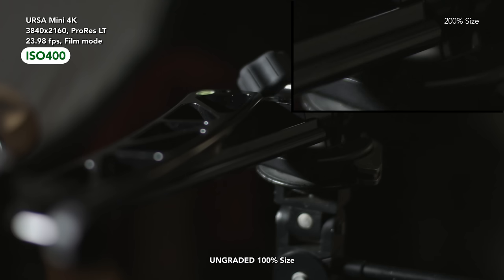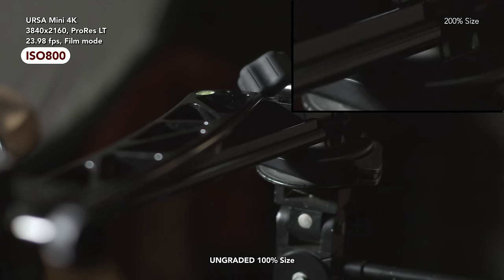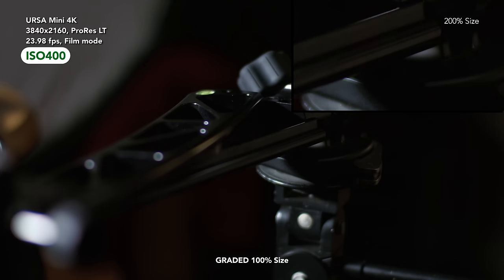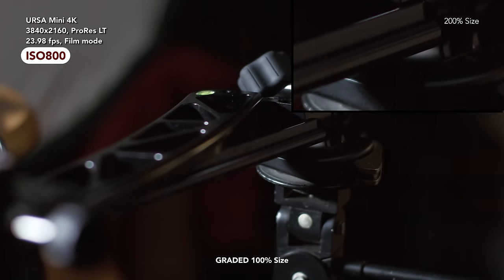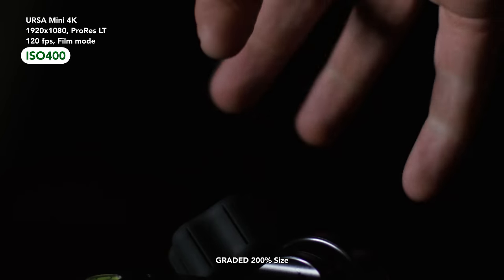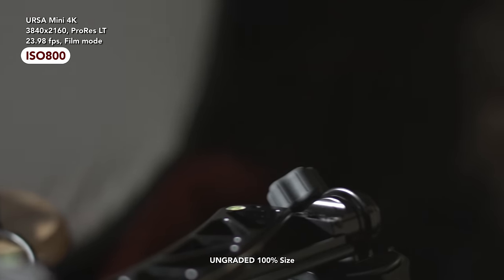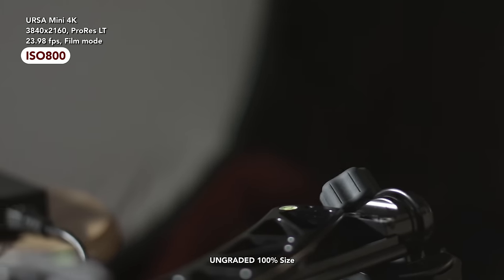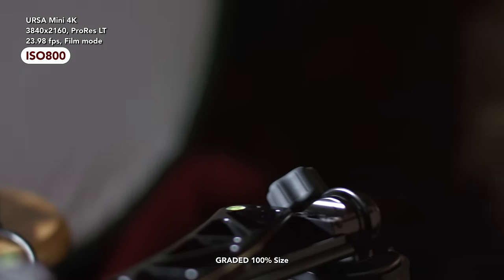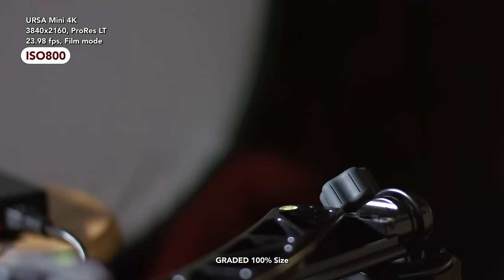ISO 800 is just awful. It is so riddled with noise, I can only imagine wanting to use it in a situation where what's happening in a scene is so spur of the moment that capturing it trumps quality. Additionally, I have only encountered the dreaded fixed pattern noise issue at ISO 800. Thus, I have trained myself to ignore the ISO 800 option altogether.